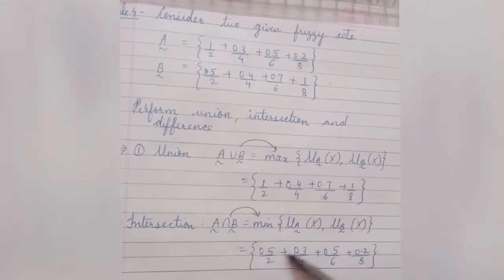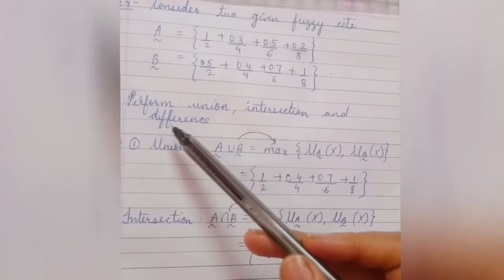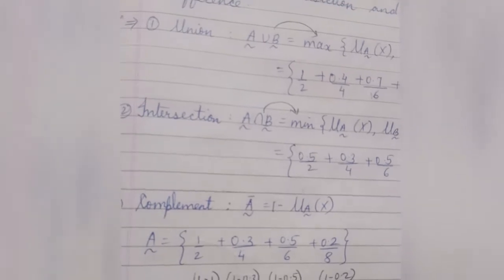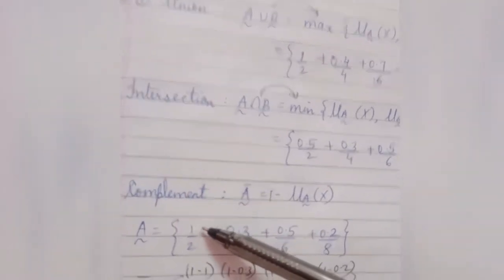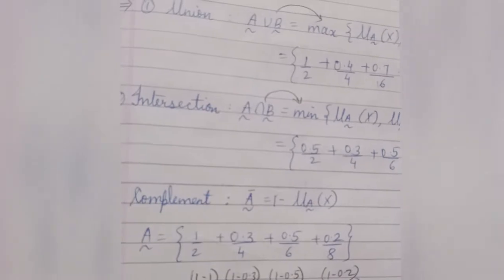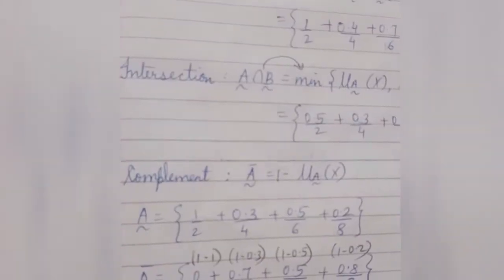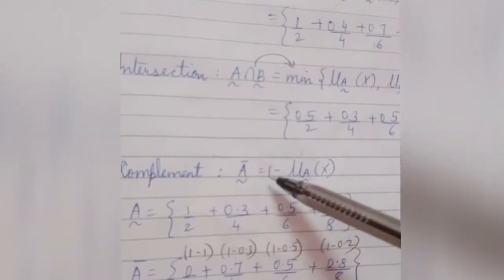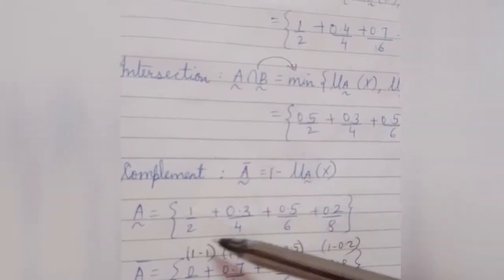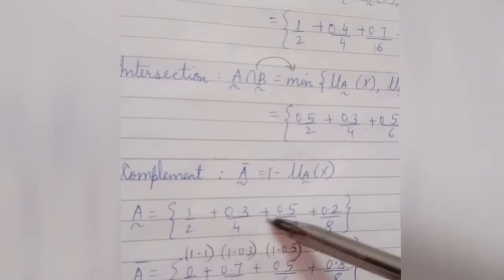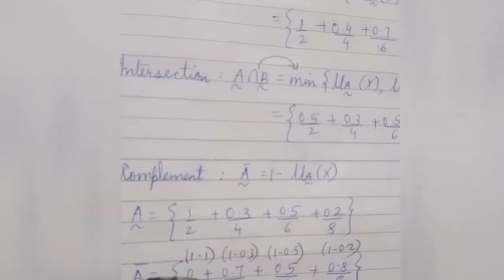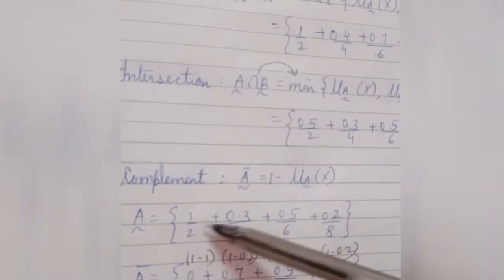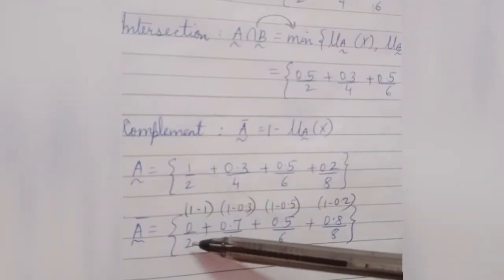Now let's perform the third operation: difference. For difference, we first need to calculate the complement of both sets. The complement of set A is given by 1 minus μA(x), meaning we subtract each membership value from 1. Set A contains four elements.